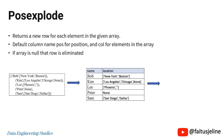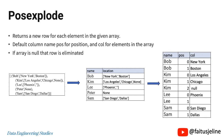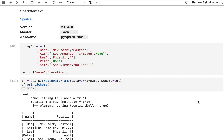Positional Explode is very similar to the Explode function. When an array or map is passed, the Posexplode function also creates a positional column for each element of the array or map. In this example, Bob has two locations, so the positions are 0 and 1, since Python indexing starts from 0. Let's see the practical implementation of the Positional Explode function.